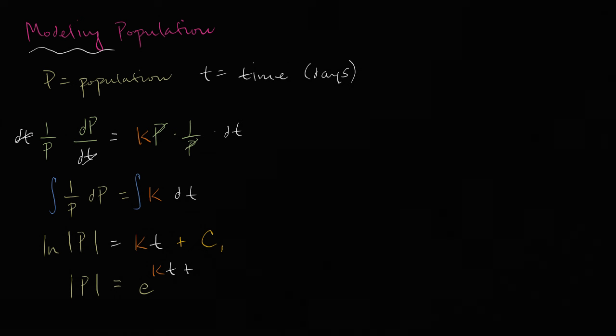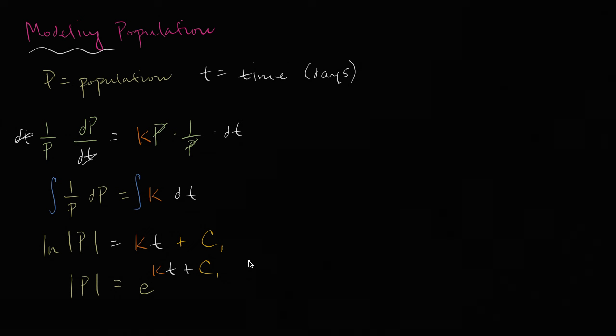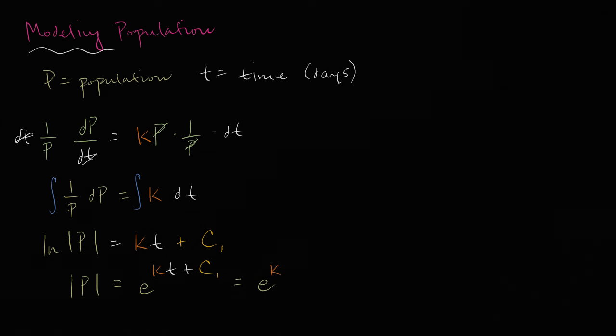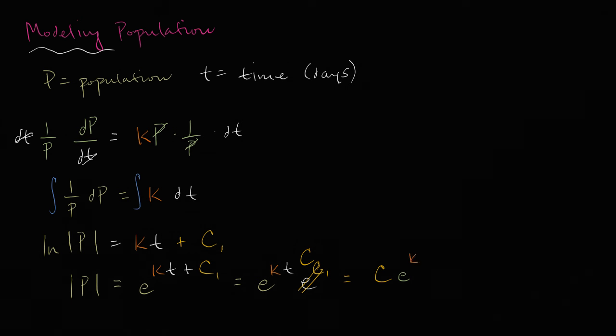Now this right over here is the same thing, just using our exponent properties, this is the same thing as e to the kt, e to the k times t, times e to the c1. Now this is just e to some constant, so we could just call this the constant c. So this is all simplified to c e to the kt.